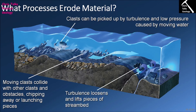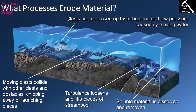Moving water creates turbulence, and the rougher the channel the more turbulence there will be — a smooth-sided channel allows water to flow with minimum turbulence, while rougher channel margins create more. Turbulence creates low-pressure regions that can be strong enough to physically loosen and lift pieces of material from the streambed, whether loose clasts or even pieces of exposed rock. One mechanism causing exposed rock to break down is the impact of clasts against it, but we must also consider dissolution — the dissolving of the rock itself.